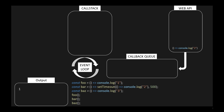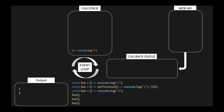Now baz is called and added to the call stack. It has a console log which is added, executed, removed from the call stack, logging 3 to the console. Then baz is removed. When the 500-millisecond timeout expires, the callback is added to the callback queue. The event loop checks the call stack and callback queue, and moves the function from the callback queue to the call stack because the call stack is empty. The function is then executed, logs 2 to the console, and is removed from the call stack.